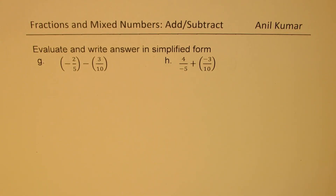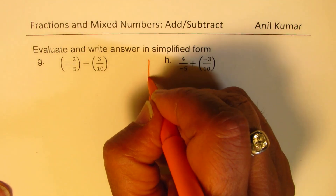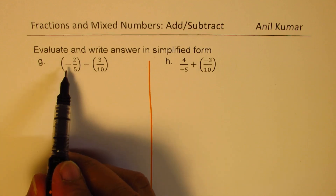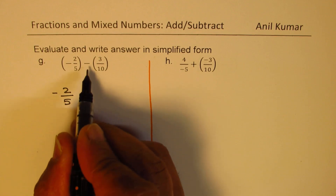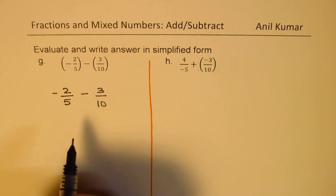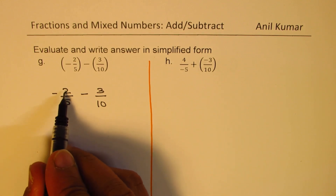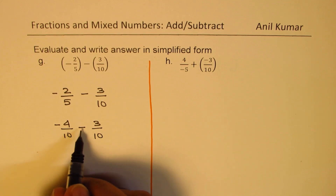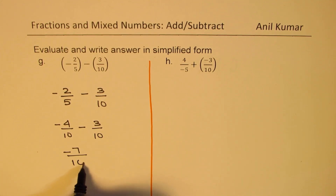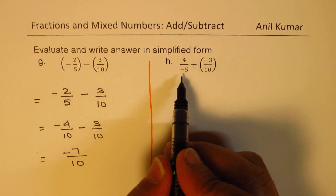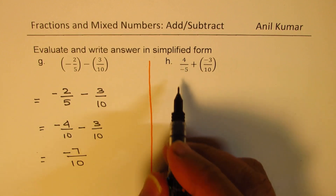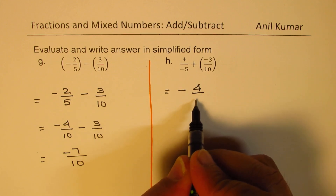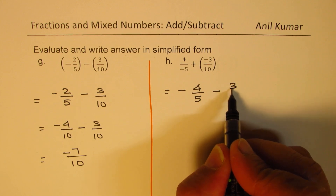Now the next two questions — I'd like you to pause the video, answer these questions, and then look into my suggestions. Both these questions involve integers. First, let us rewrite this. We have minus 2 over 5, and this is also minus 3 over 10. The common denominator is 10, so we could make 10 by multiplying the first by 2. We get minus 4 over 10 and minus 3 over 10. Minus 4 minus 3 gives you minus 7, and we get minus 7 over 10 as our solution. Now in this case, plus and minus makes it negative. Whenever we are given a negative in the numerator, it is a good practice to write this as negative 4 over 5. Plus and minus will also give you negative 3 over 10.